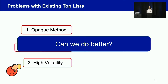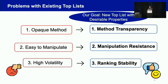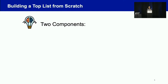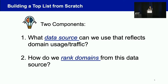In our work, we considered: can we do better? We aim to build a new top list that avoids those undesirable properties. By doing so, we need to consider two components: first, what data source can we use that reflects domain usage, and second, how do we rank domains from this data source.